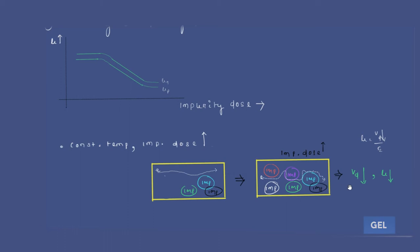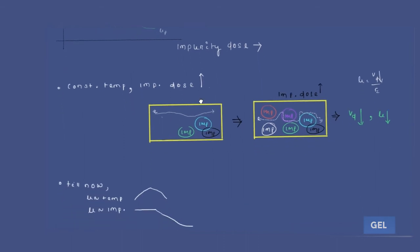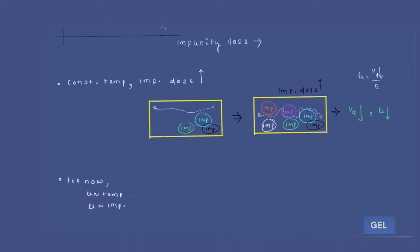We can say that drift velocity is decreasing with increase in impurity dose. That means mobility will also decrease. At a certain point, as you increase the impurity dose, mobility decreases. The mobility for electrons is higher than that of holes, which is why the electron graph lies above the hole graph.